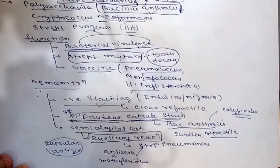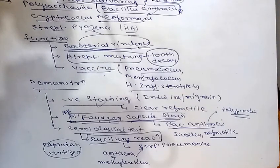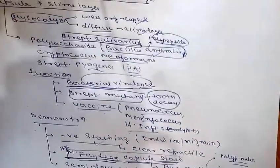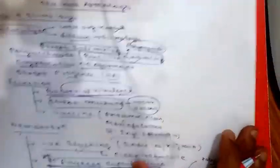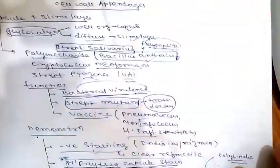Capsular antigen can also be detected in samples such as CSF by latex agglutination test using specific anti-capsular antibodies coated on latex particles. This is available for Pneumococcus, Cryptococcus, Haemophilus influenzae, and Meningococcus. This concludes capsule and slime layer.